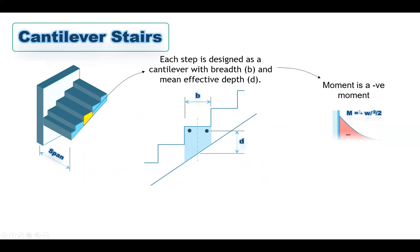To design the cantilever stair, we assume the step is supported on the shear wall as a fixed support, making it a cantilever. If we assume a uniform load W over span L, the moment will be WL²/2, and it will be a negative moment: −WL²/2. Of course, if you have a handrail, you add an additional concentrated load at the end and calculate the moment based on both the uniform load and that concentrated load.